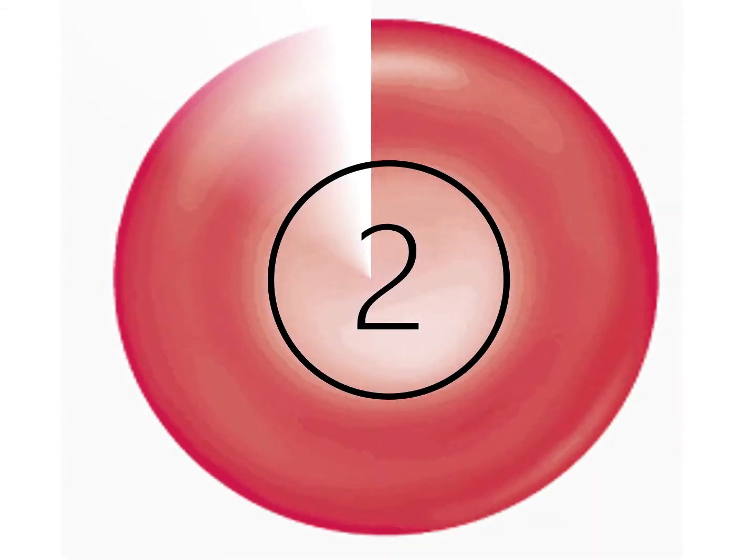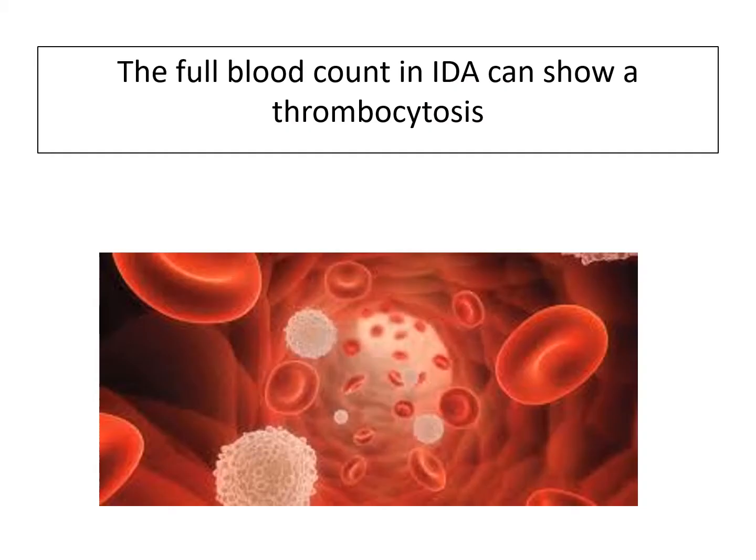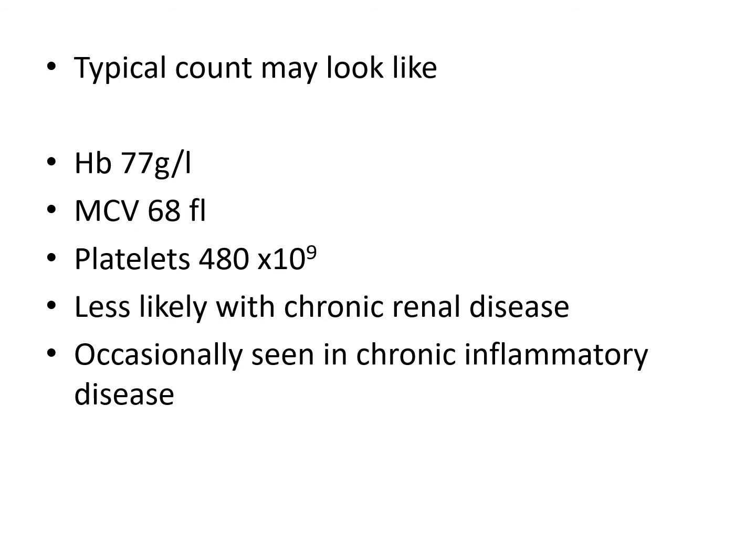Number two: the full blood count in iron deficient patients can show a thrombocytosis. We're all used to seeing a full blood count with microcytosis — that's the hallmark of iron deficiency. But often these patients will also have a high platelet count. Those with chronic kidney disease are unlikely to have this. Those with chronic inflammatory disease, your classic anemia of chronic disease, might have a slightly high platelet count, but usually in iron deficiency it's even higher.